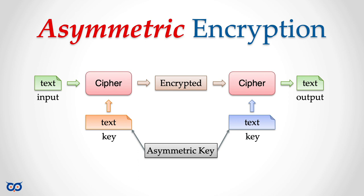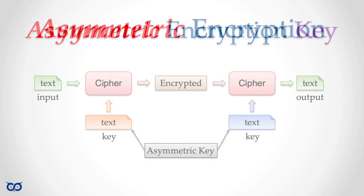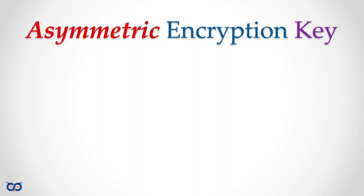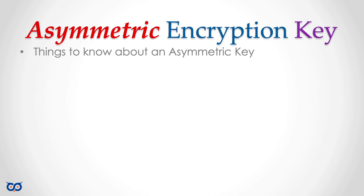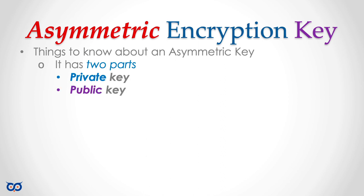Here are the key things to know about asymmetric encryption. First, the key comes in two parts: one key used for encryption and another used for decryption. These are usually called the private key and the public key. The hint is in the name — the public key you give to everybody, while the private key you keep close to your chest.